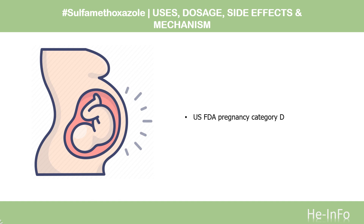Safety Advice: Trimethoprim/sulfamethoxazole is an FDA pregnancy category D medication. Use during early pregnancy has been related to congenital malformations and maternal folic acid deficiency. This may cause neural tube defects, spina bifida, urinary tract defects, oral clefts, and clubbed feet.